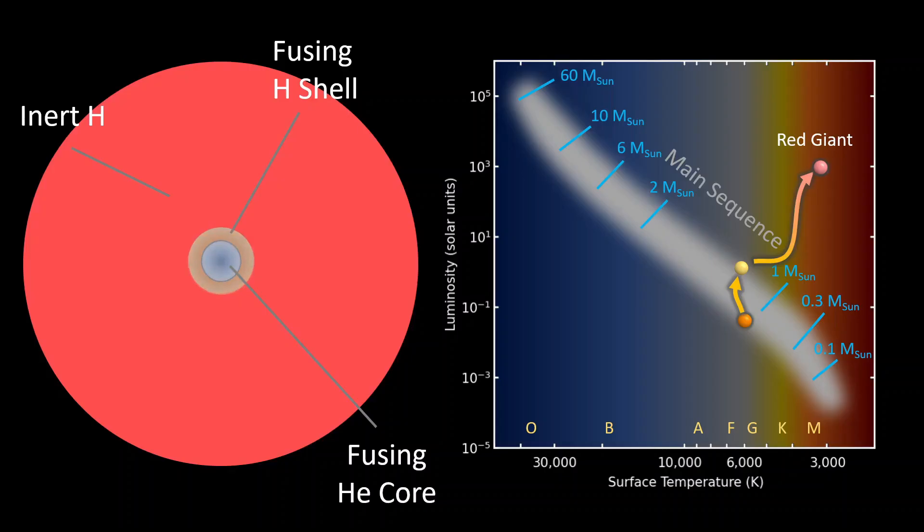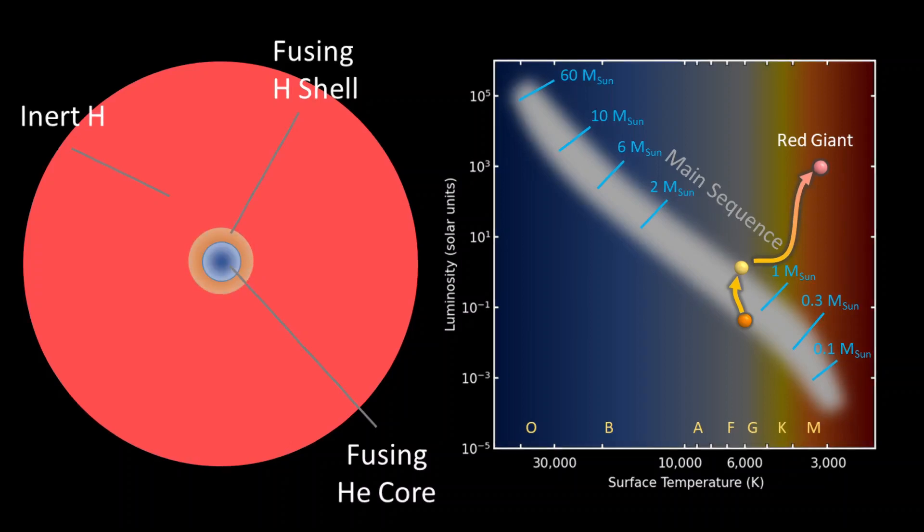The energy released increases the temperature of the star core and quickly intensifies the rate of nuclear reactions. This blast of helium fusion is called the helium flash. The structure of the star at this stage consists of a core with helium fusion surrounded by a shell of fusing hydrogen and an upper layer of inert hydrogen.